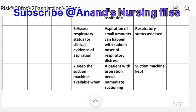Intervention six: Assess respiratory status for clinical evidence of aspiration. Rationale: Aspiration of small amounts can happen with sudden onset of respiratory distress. Implementation: Respiratory status assessed.